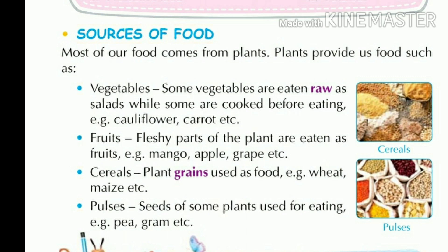Fruits — the fleshy parts of the plant are eaten as fruits. Examples include mango, apple, grape, etc. Seeds of plants such as wheat and maize are also used as food.